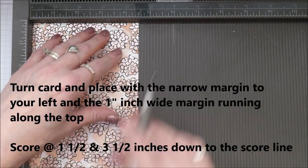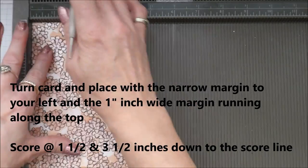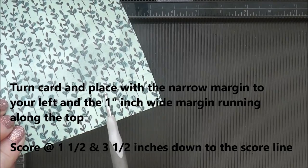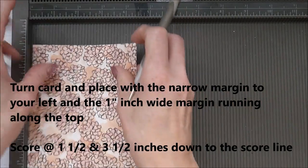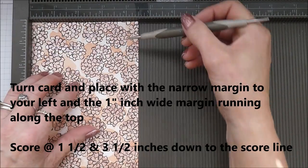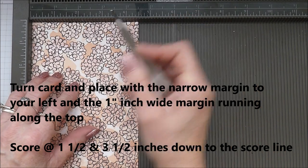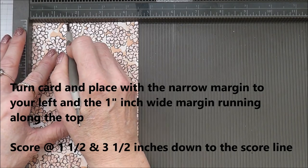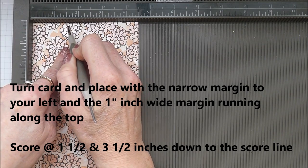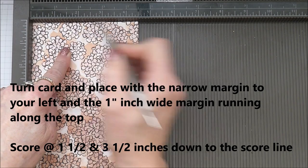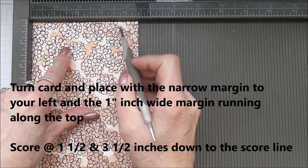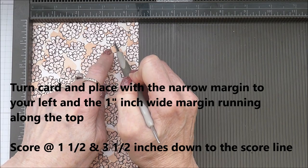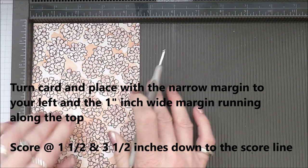And we've got that one inch score line that we've just made that's up here at the top. So you've got your one inch margin here. So what you need to do is go in at one and a half inches and score down to this score line. And then you're going to score here at three and a half inches down to that score line.